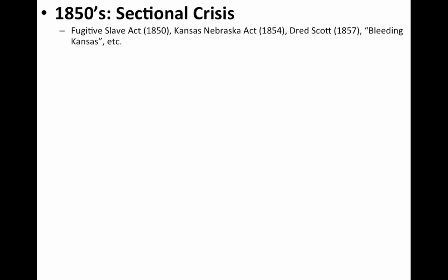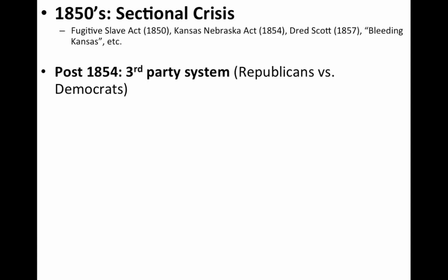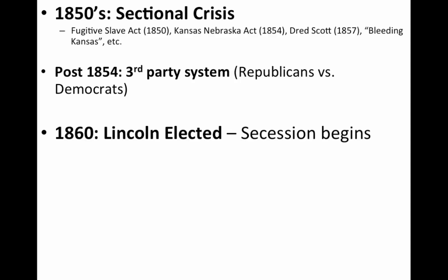Throughout the 1850s, you have sectional crisis and lots of sectional tension. The North hates the Fugitive Slave Act. The Kansas-Nebraska Act destroys the Whig Party. You have Dred Scott, Bleeding Kansas — a lot of sectional tension. Post-1854, after Kansas-Nebraska, you get the emergence of the third party system — Republicans versus Democrats. The Whigs are gone. And in 1860, Lincoln is elected, which begins secession, with South Carolina being the first state to leave.